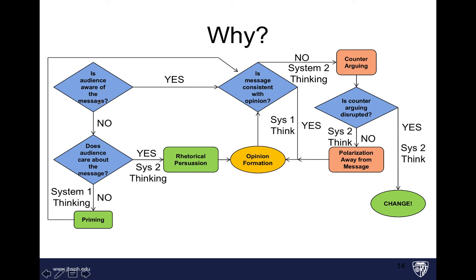Now let's say they've never heard the message but you've managed to make them care about it. System two thinking — the logical processing of the brain — kicks in. At this point, rhetorical persuasion becomes important: ethos, pathos, and logos are going to be effective at helping form an opinion. People are going to think about and evaluate the information and make some sort of decision on what they believe. The next time they receive information, they've heard about it before, so the next question becomes: is this new information consistent with my existing opinion? If yes, it may just reinforce that opinion without much deliberation.